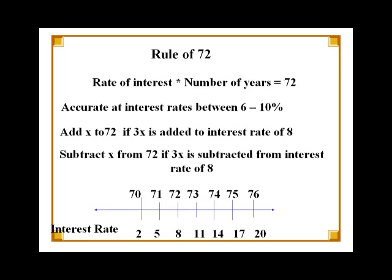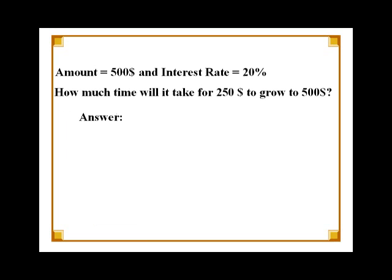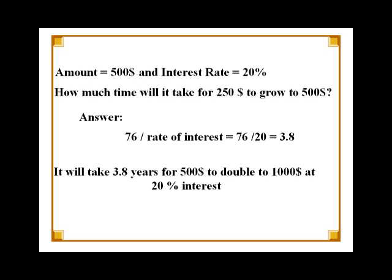Let me illustrate this with an example. Suppose you have $500 invested at an interest rate of 20% and you want to calculate how soon your money will double. You will divide 76 by the rate of interest. This gives us 3.8. So $500 is likely to double in 3.8 years at 20% interest.